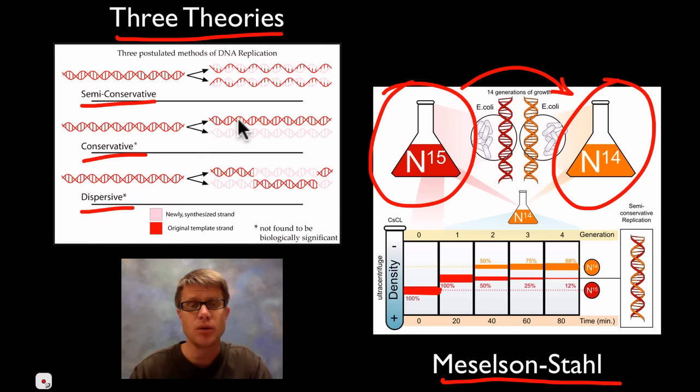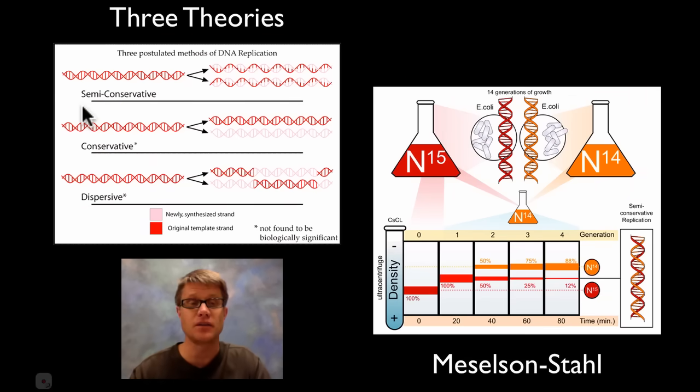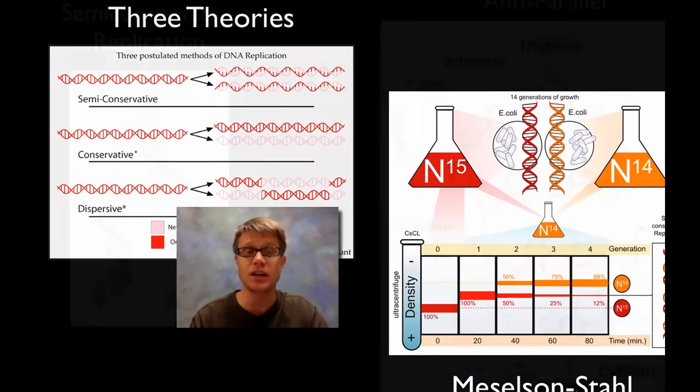They then put them on a broth of nitrogen 14. And basically in that first generation, if it would have been conservative, we would have had one band that would have been totally heavy at this N15 line and then one that was at N14. But instead we got this intermediary amount of DNA. In other words it was a mix of the two. And then through generation after generation they were able to figure out that this is how DNA copies itself. It copies itself semi-conservatively.